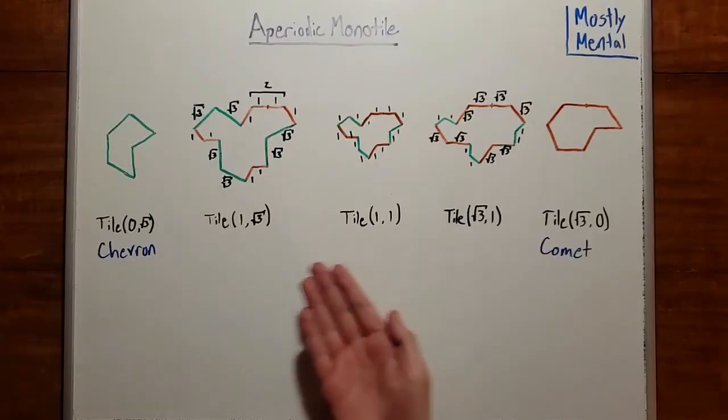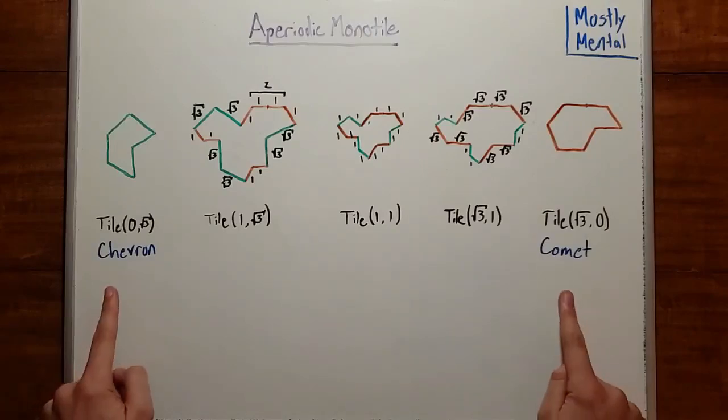We'll prove that every shape on this continuum, except for the endpoints, is also an aperiodic monotile.